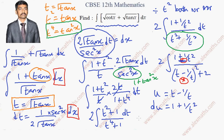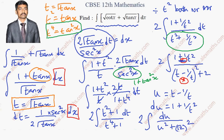Replacing everything, this becomes 2∫ du / (u² + 2). I will purposely write 2 as (√2)², so the denominator is u² + (√2)².